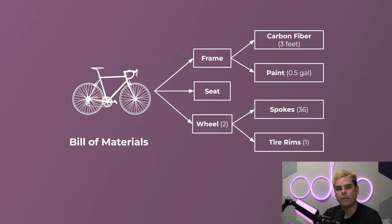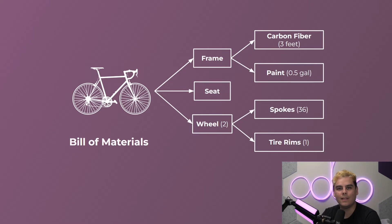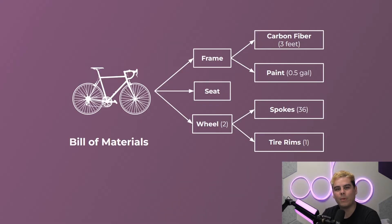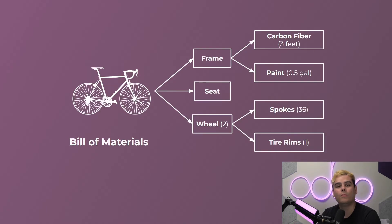Here we can see an engineering breakdown for a bicycle. As you can see, it's quite simple, but it references every product and sub-product required to complete the bike. Keep this blueprint in mind, as we'll learn more about BOMs in subsequent videos.